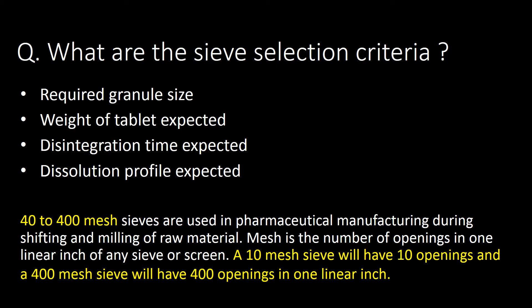What are the sieve selection criteria? Sieve selection is based on four factors: required granule size, weight of tablet expected, disintegration time expected, and dissolution profile expected. Forty to 400 mesh sieves are used in pharmaceutical manufacturing during sifting and milling of raw material. Mesh is the number of openings in one linear inch of any sieve or screen — a 10-mesh sieve has 10 openings and a 400-mesh sieve has 400 openings per linear inch.